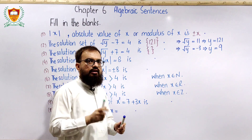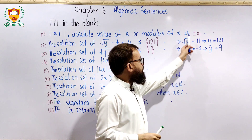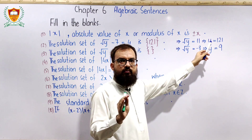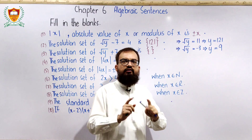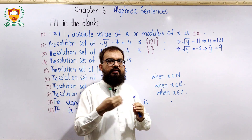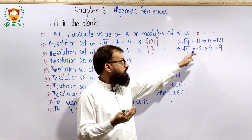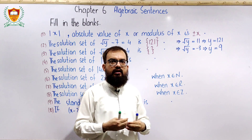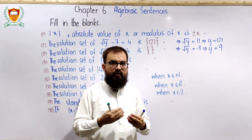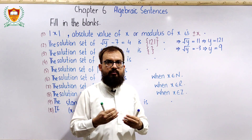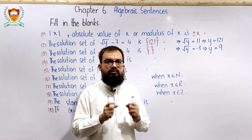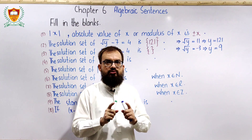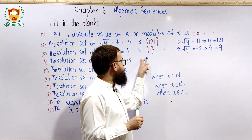یاد رکھیے: جب square root والی equation میں right-hand side positive ہو تو answer verify ہوتا ہے۔ لیکن اگر simplify کرنے پر negative value آئے اور squaring سے وہ positive بن جائے، تب بھی verification پر LHS = RHS نہیں بنتا — تو ایسی صورت میں solution set empty set ہوتا ہے۔